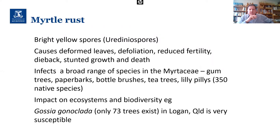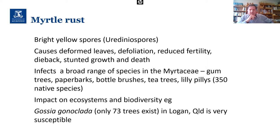In the Logan region of southeast Queensland, a relatively new tree species named after Premier Wayne Goss — Gossia — was discovered. There are only about 73 trees in existence, and they've been found to be very susceptible to myrtle rust. It's something we want to protect and try to prevent from getting infected.